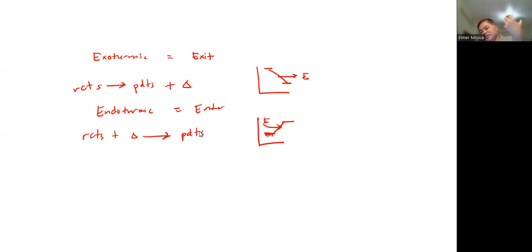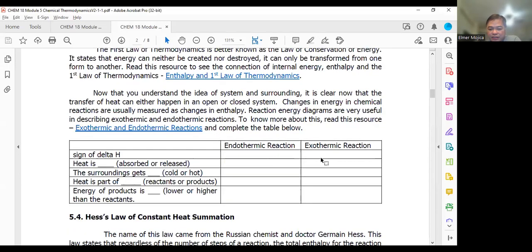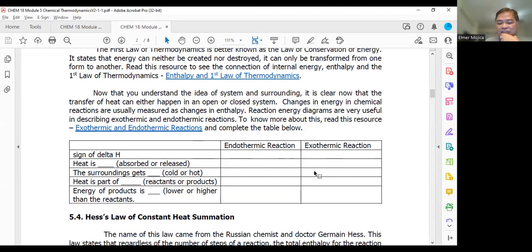For an exothermic reaction, the system releases energy to the surroundings; the energy can be in the form of heat or work. For an endothermic reaction, the energy is absorbed by the system. Regarding the sign of delta H: positive means heat is absorbed; negative means heat is released. Surroundings get cold because the system absorbs energy; surroundings get hot because the system releases energy.